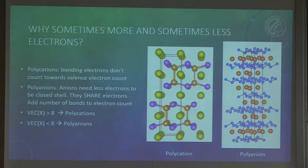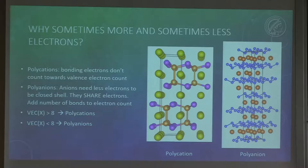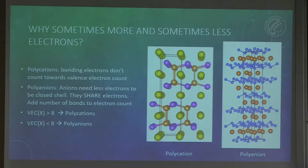So why do we sometimes have more and sometimes fewer electrons? The difference lies in whether the atoms bonded to each other are cations or anions - we can have poly-cations or poly-anions. If you have poly-cations, not all the electrons are donated to the anions, so some don't count into your counting and you'll count more than you actually need. But if it's the other way around and you form a poly-anion, your anions are bonded to each other, so they share electrons and need less than 8 to have a closed shell. Simple rule: if you count more than 8, check for poly-cations; if you have less than 8, check for poly-anions.